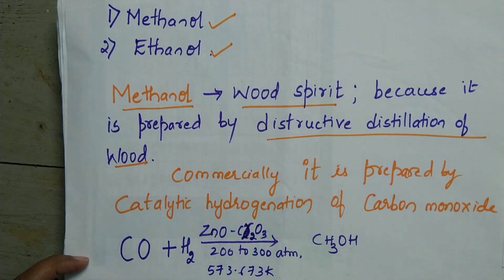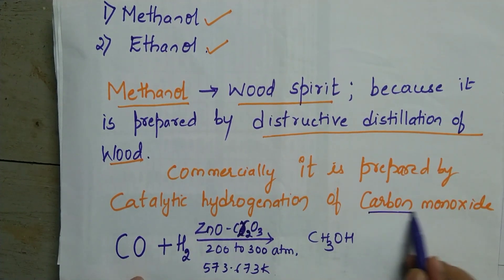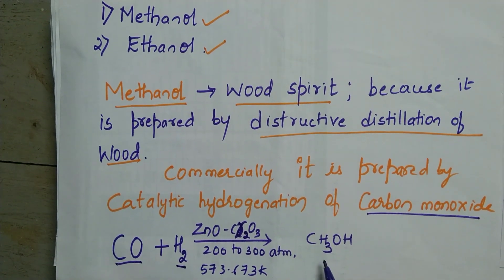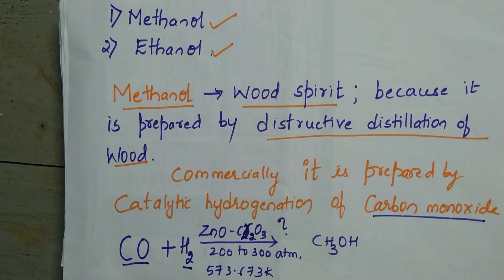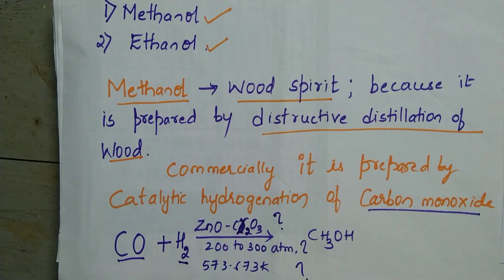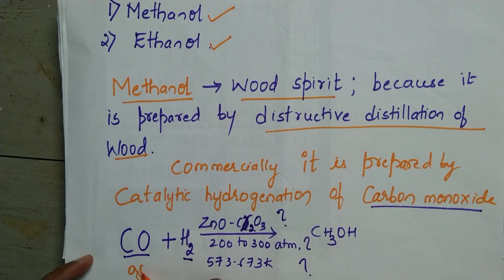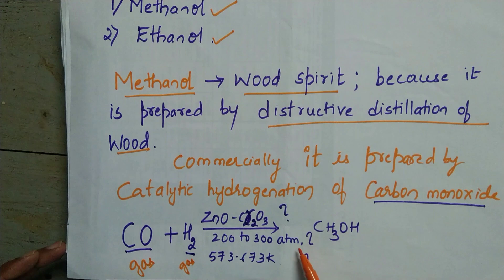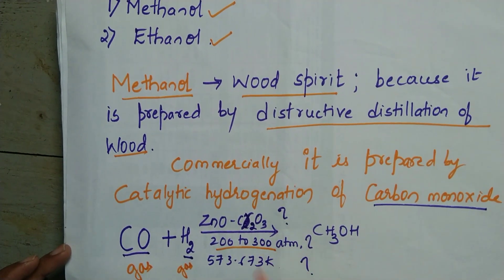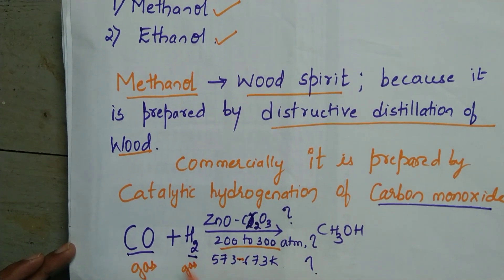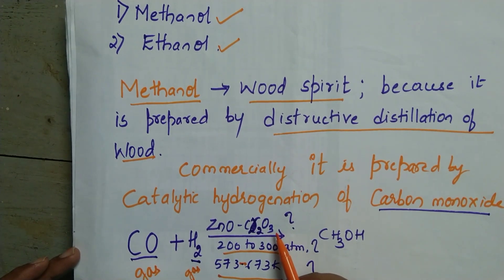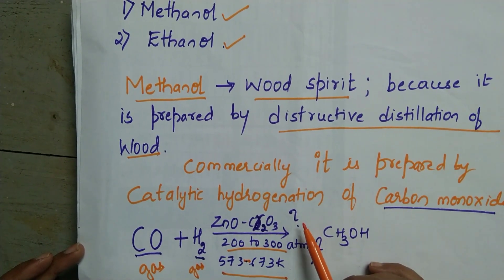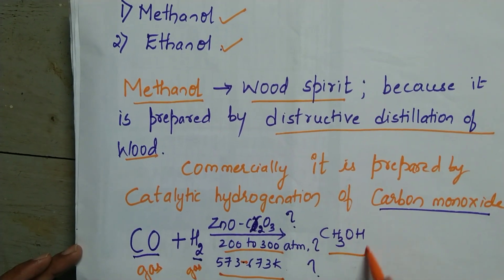Commercially, methanol is prepared by catalytic hydrogenation of carbon monoxide. Carbon monoxide is subjected to hydrogenation in the presence of a catalyst to yield methanol. High temperature and high pressure are used because carbon monoxide and hydrogen are both in gaseous state and must be brought very close together. A pressure of 200 to 300 atmospheres is applied, with a catalyst of zinc oxide and chromium trioxide, to produce methanol.